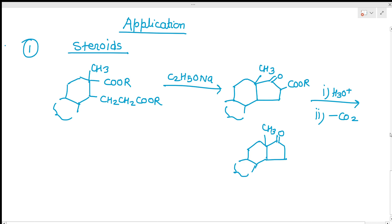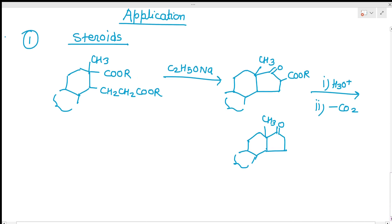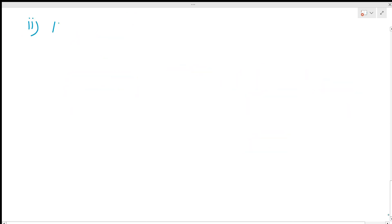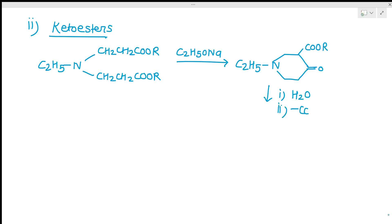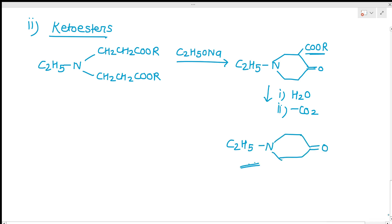Similarly, it can be used for the preparation of keto esters. If we have to prepare keto esters, the diester is treated with C₂H₅ONa, then with H₂O for hydrolysis, and then decarboxylation. The COOC₂H₅ group is removed and we obtain the keto ester product.